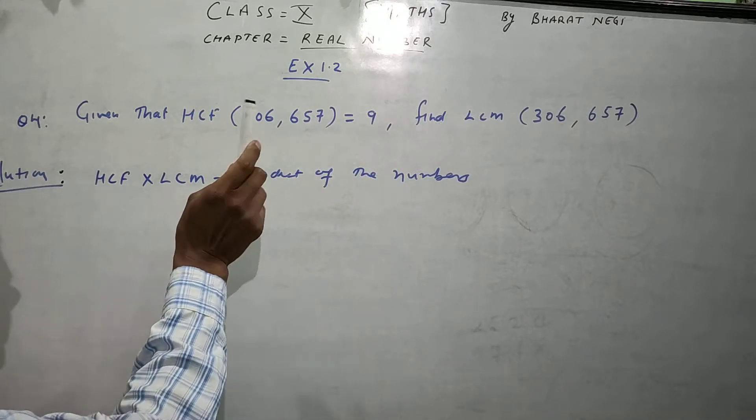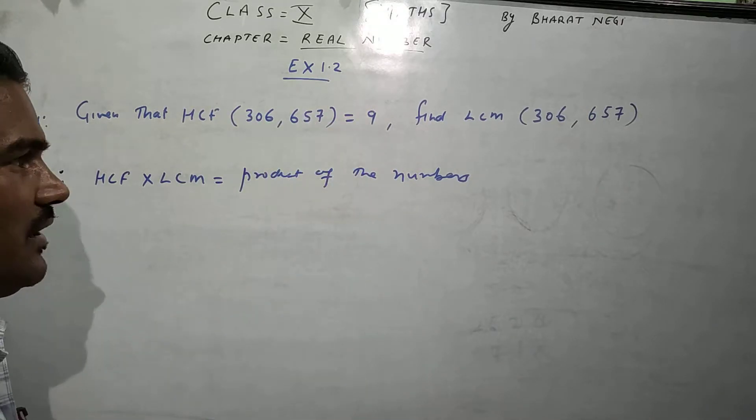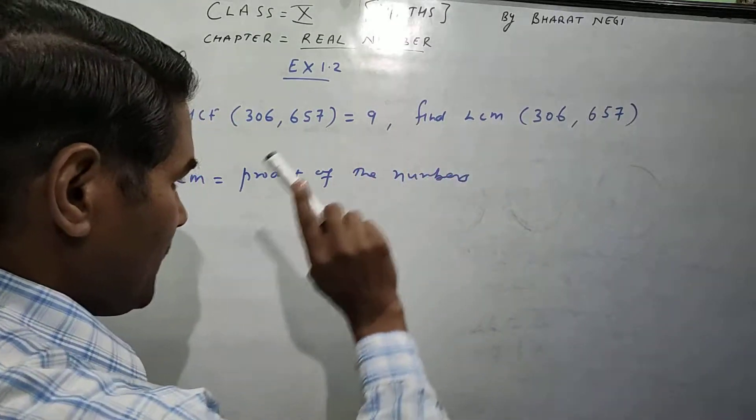That means the two numbers have an HCF of 9. We have to find the LCM of the given numbers.